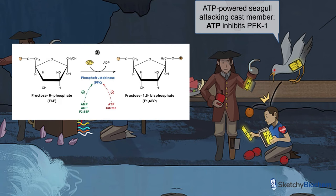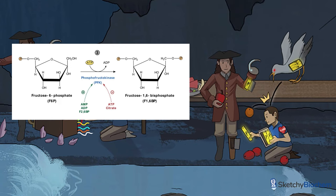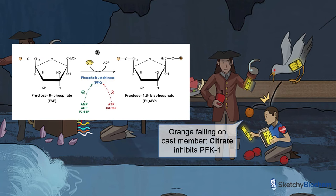Citrate is a TCA cycle intermediate and the other inhibitor of PFK1. The end product of glycolysis, pyruvate, is eventually converted to citrate during the TCA cycle. When citrate levels are high, that means the intermediates of the TCA cycle are saturated and we can slow down glycolysis. Citrate leaks out into the cytosol to inhibit PFK1, just like this orange falling on our friendly cast member and distracting him from doing his job.